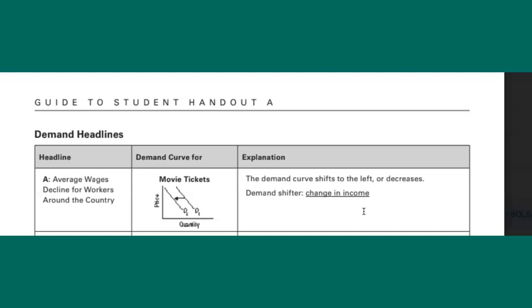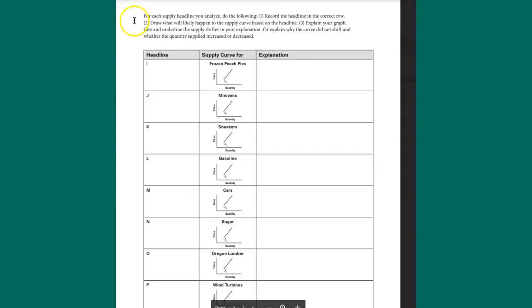Let's check out one example with supply. Be straightforward. Same kind of thing here. You're going to match up your headline with the headlines listed on the next pages. And then you're going to provide an explanation for each one. So let's do the first one together.